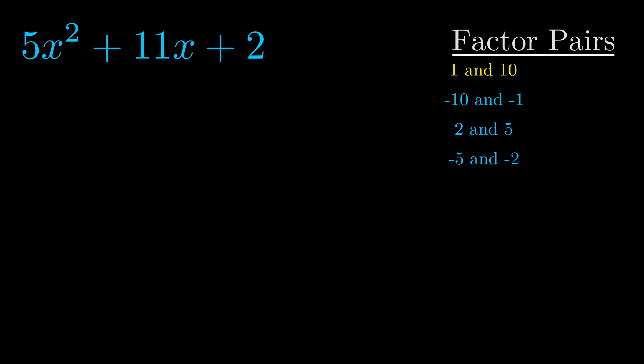And really this is the only factor pair that we need. Now once we have this factor pair what we want to do is use it to split up the b value.